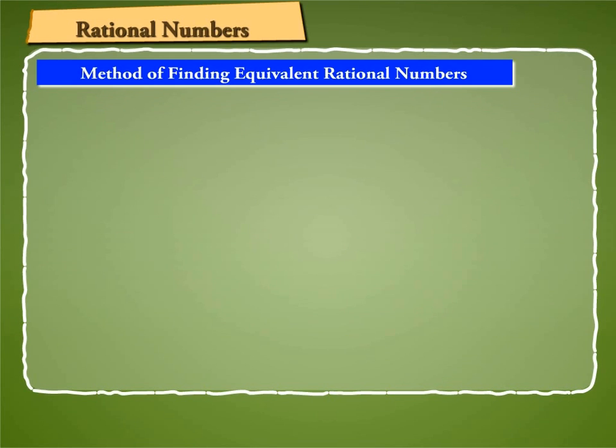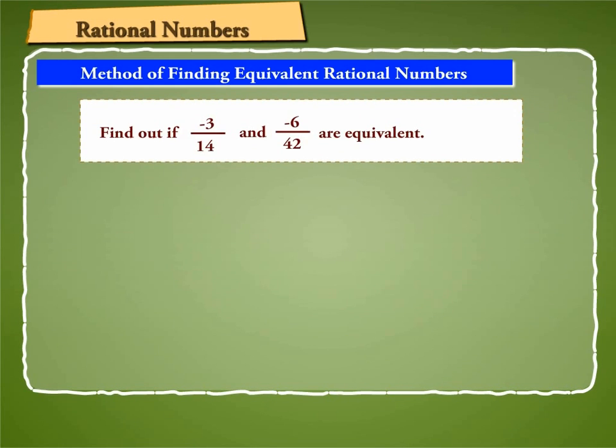Let us take an example to see if the two given rational numbers, minus 3 by 14 and minus 6 by 42, are equivalent or not.